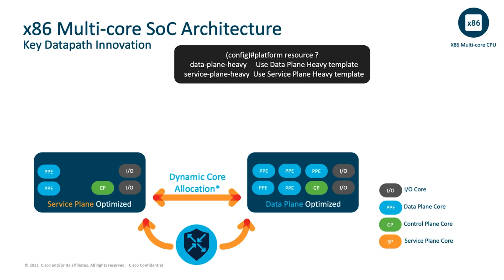In a 12-core system, you will still be able to host applications in the data plane mode due to higher core availability. This is only available on the higher-end model of the Catalyst 8300 series, which is the C8300-2N2S-42X model.